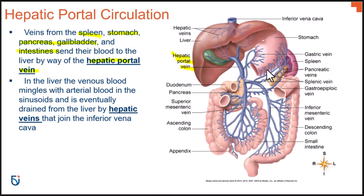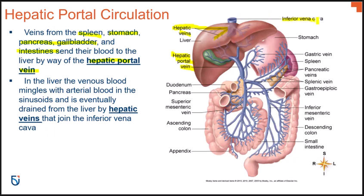To reiterate: blood from the stomach, pancreas, spleen, and gallbladder all first enters the liver through the hepatic portal vein — portal because it's called portal circulation. It goes through the liver, is detoxified, and then exits the liver through the hepatic veins. Make sure you know the difference between the hepatic portal vein, which is blood entering the liver, and the hepatic veins, which carry blood leaving the liver. The term hepatic refers to the liver. Then it ends up in the inferior vena cava and is sent back up to the heart to join normal circulation.